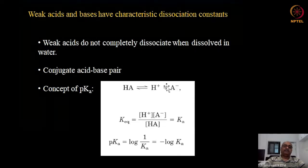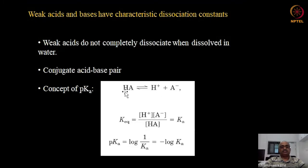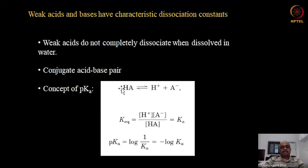The main point here: HA is an acid that can donate a proton, and the resulting A⁻ is a base because it can accept a proton in the reverse reaction. These two — the weak acid and the base formed as a result of its dissociation — together we call a conjugate acid-base pair. For example, acetic acid dissociates into protons and acetate ion, and acetate ion is the conjugate base for acetic acid.